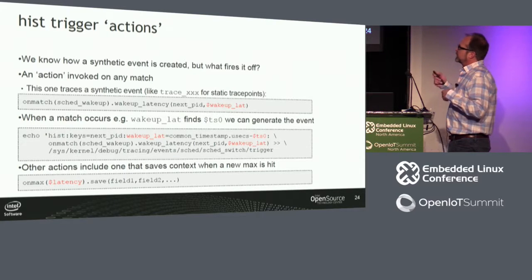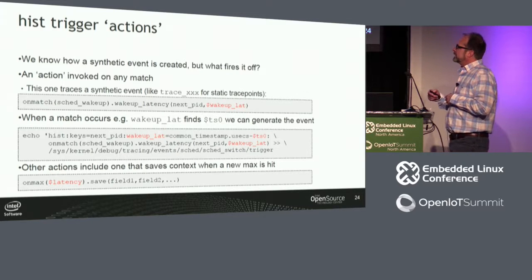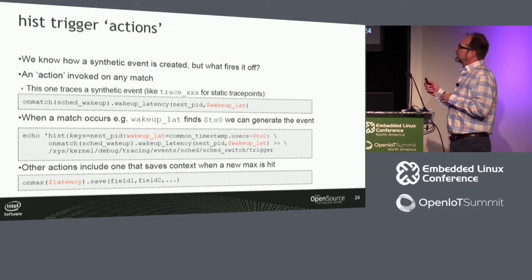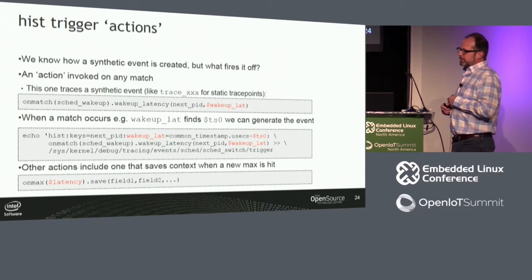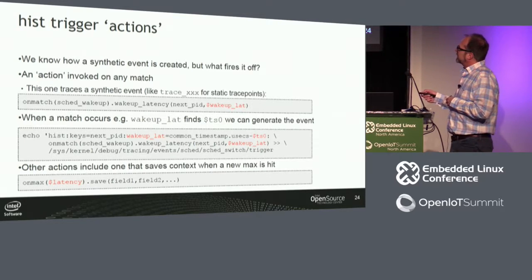The idea of an action is a more generic thing — I want to be able to do things besides just tracing a synthetic event. One of the other things, specifically from the RT patch latency_hist, is that when it sees a latency spike it saves the previous PID and next PID so you can go back and see what might have contributed to the latency. The on_max_latency action — which you can feed any variable to — basically implements that.